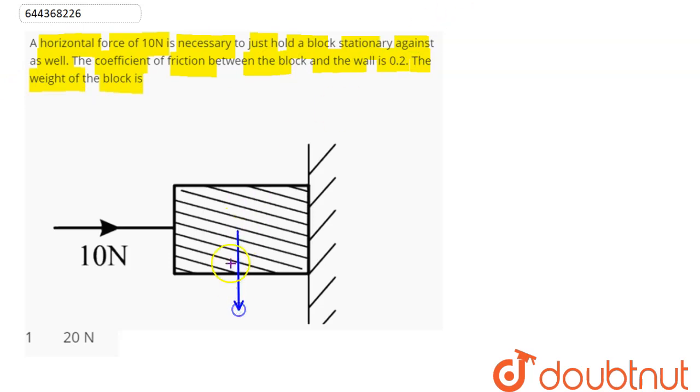We can say here weight of the block will be acting downward. To prevent its sliding, friction will act upward. Here this external force is acting towards plus x-axis and here normal reaction by the wall will be acting along minus x-axis.